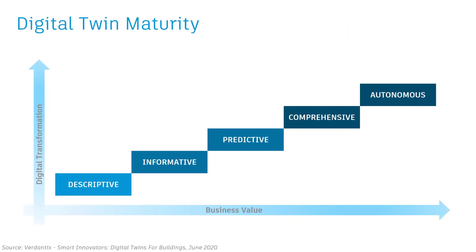Redantex proposed a maturity model for digital twins comprised of five levels. The base level they call a descriptive twin, which is comprised of a live editable version of the design and construction data. Informative twins add operational and sensor data to the twin, making them a single pane of glass. And predictive twins begin to leverage that operational data for insights. Comprehensive twins add simulation for future what-if scenarios. And autonomous twins have the ability to learn and act on behalf of users and occupants. Each level requires a greater degree of BIM maturity and digital transformation, but each level also offers greater value to your business.